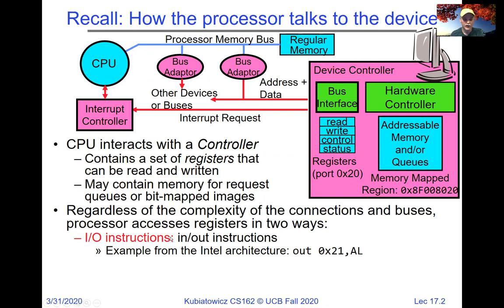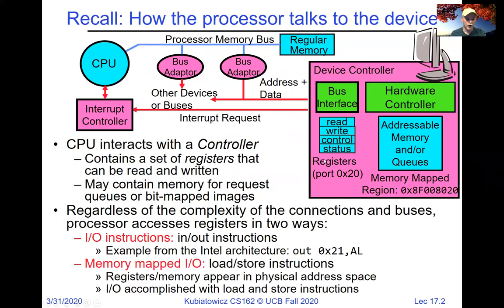One is I/O instructions. For example, an 'out' instruction to 0x21 with register AL sends whatever contents are in register AL out to port 21. That port 21 goes over a special I/O bus and might end up reading or writing some control register. Alternatively, and much more common, we have memory-mapped I/O, where reading and writing through load and store instructions goes directly to the hardware and causes I/O to happen.